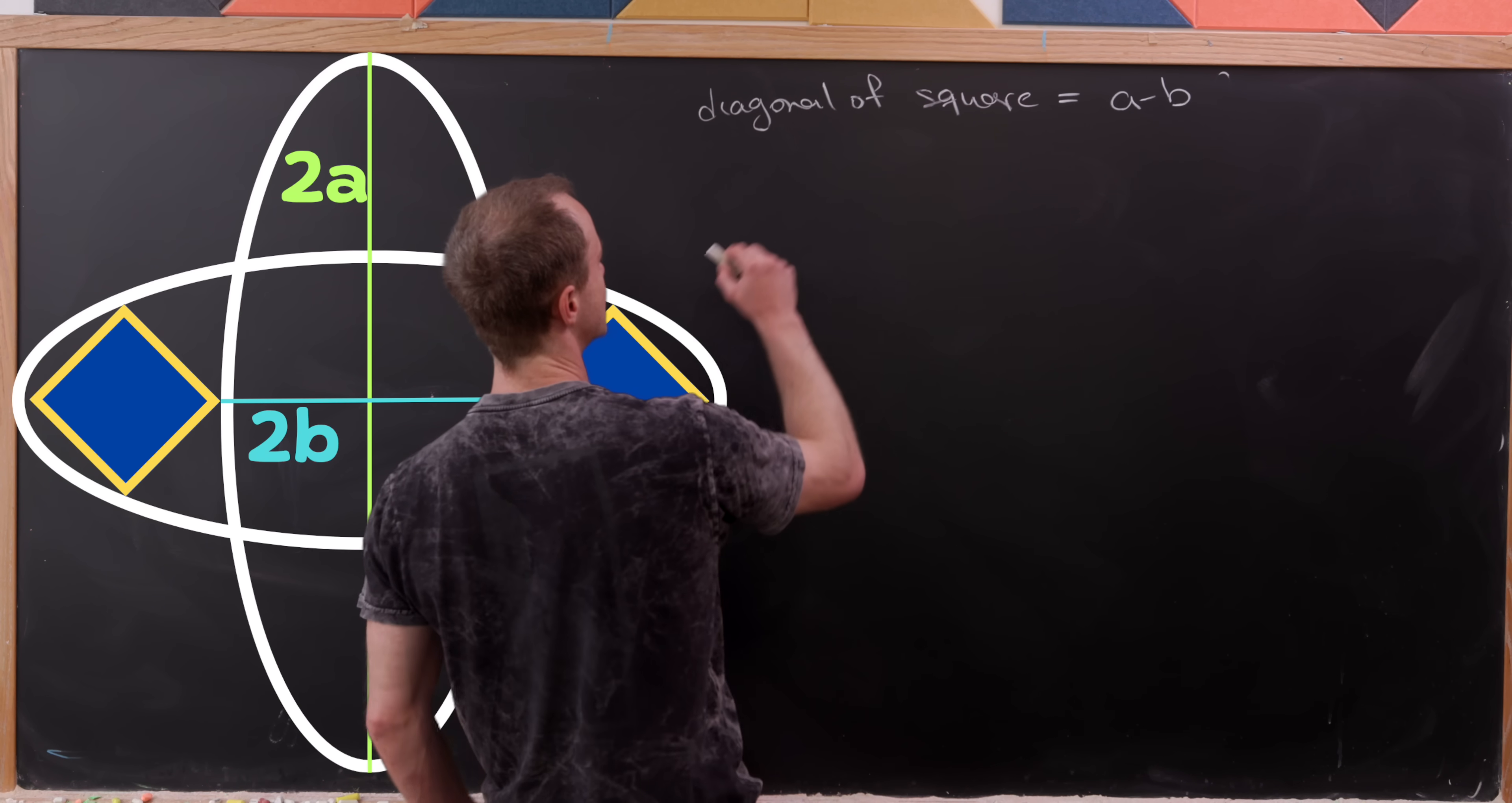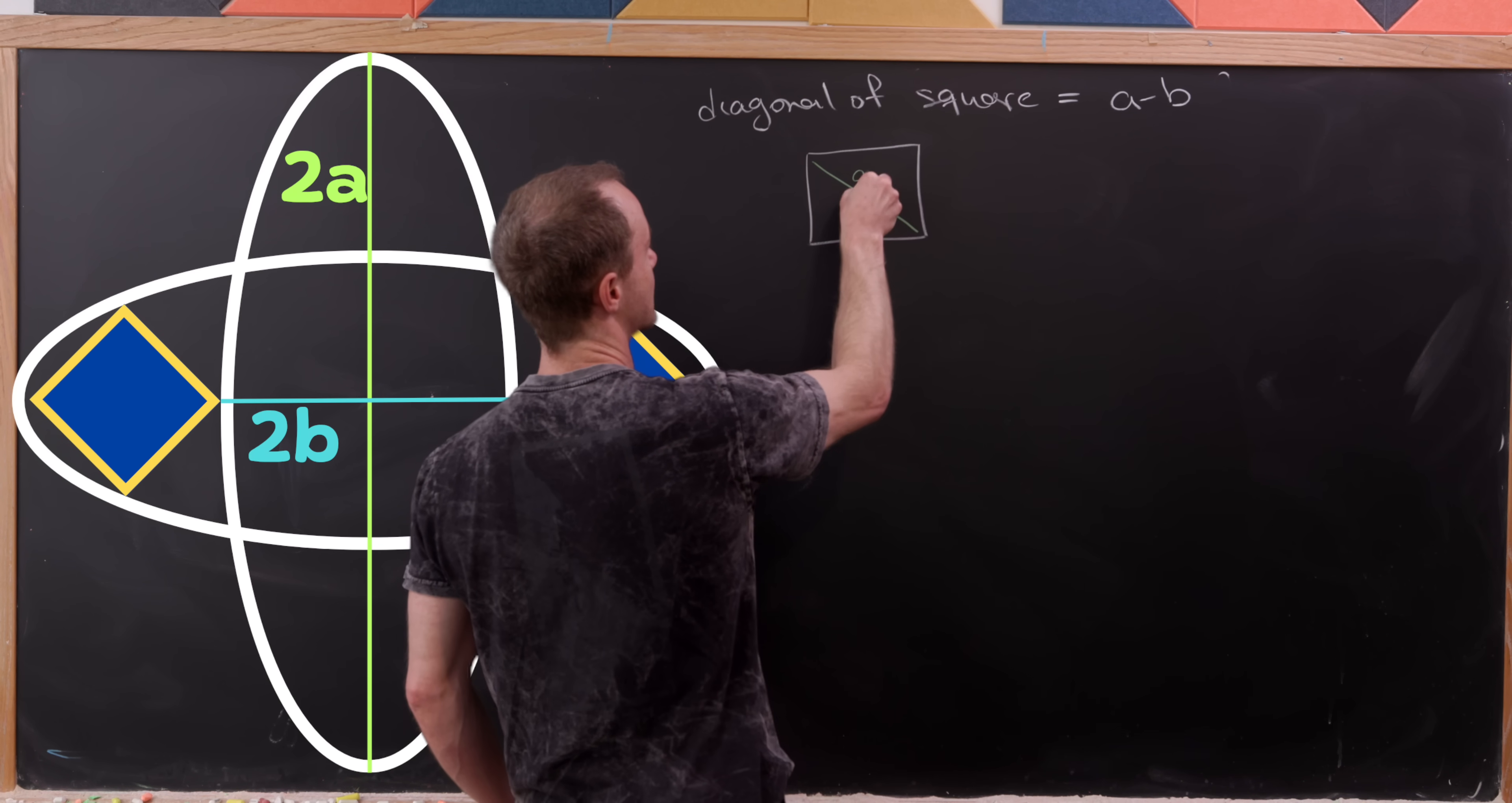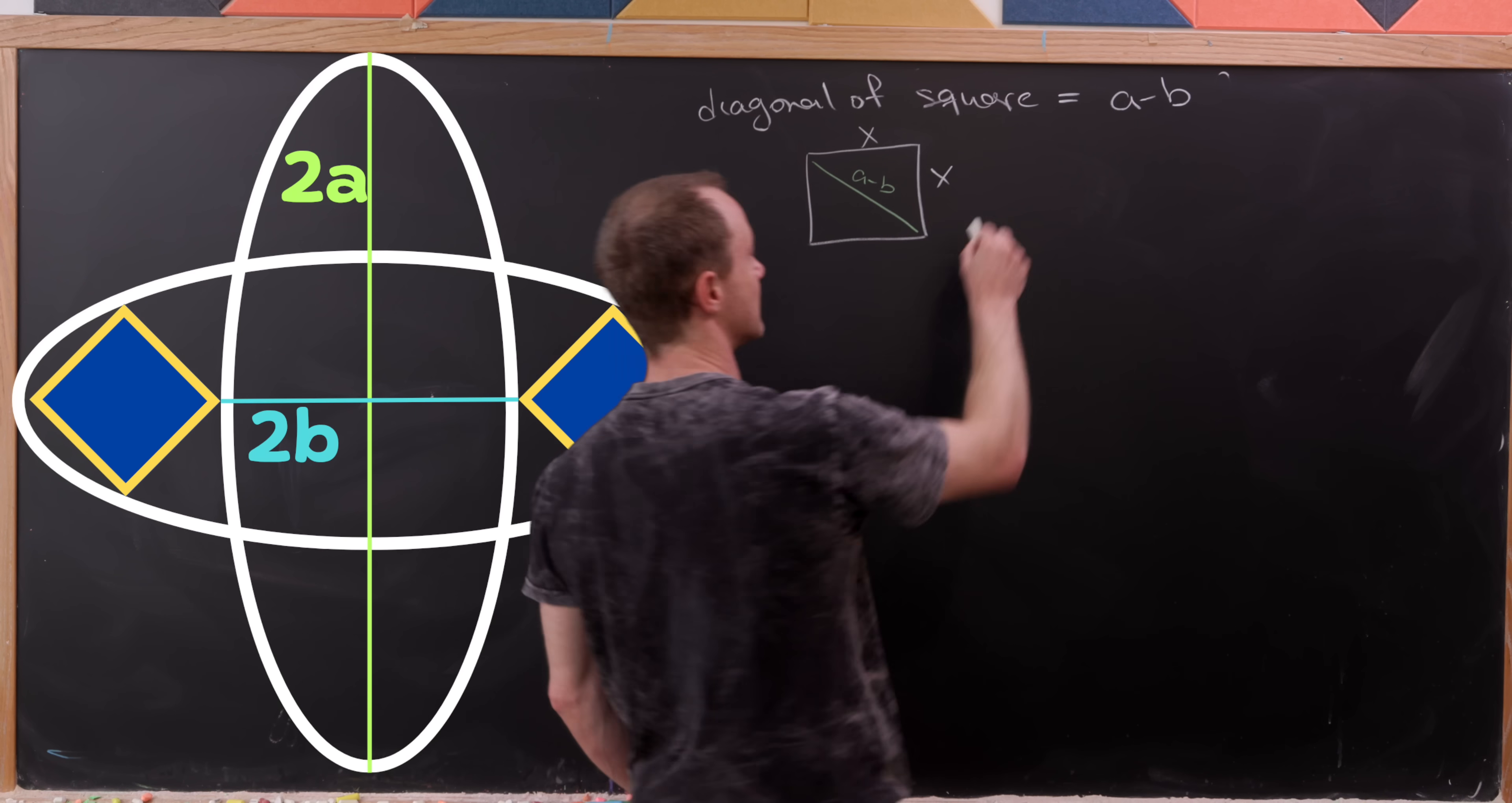But notice we know that we can relate the diagonal of a square, which we've just determined is A minus B, with the side length, which maybe we'll call X, using the Pythagorean theorem.